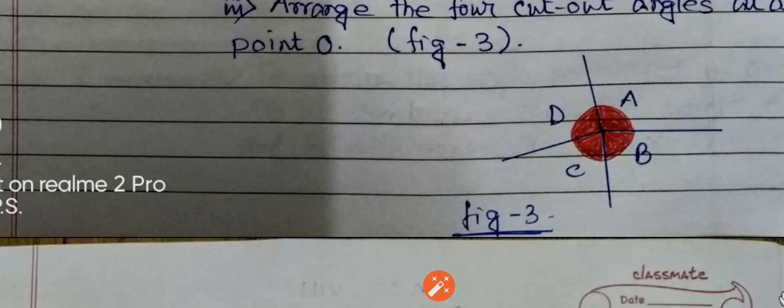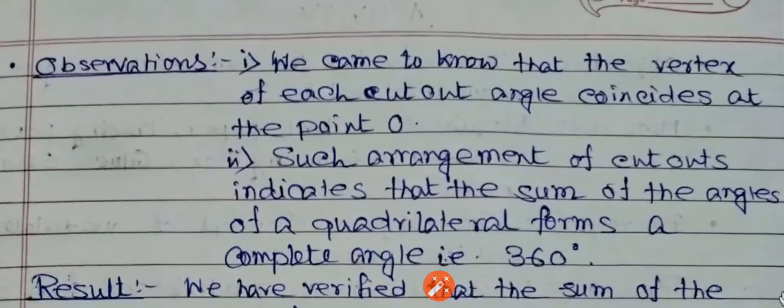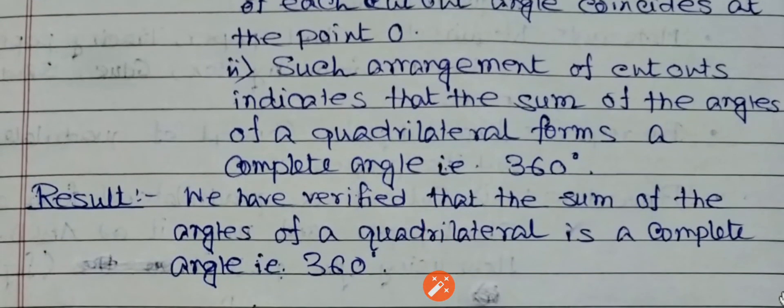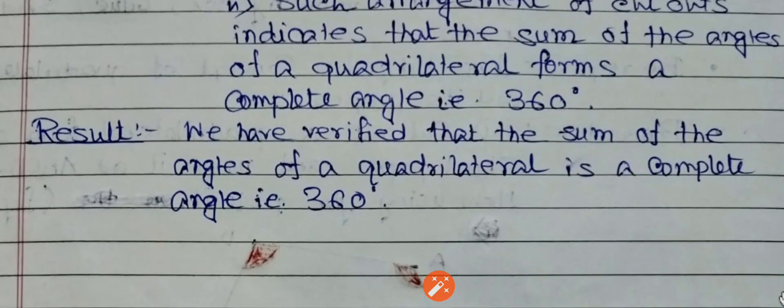And the angles we are getting from angle A, angle B, angle C and angle D. So we can say that sum of the angles of a quadrilateral is 360 degrees.